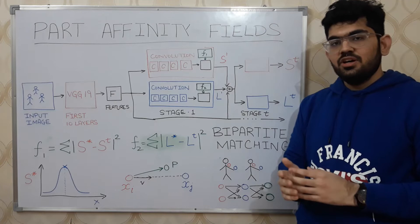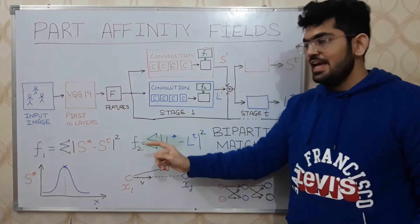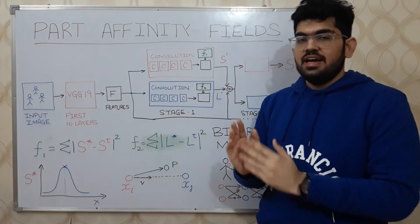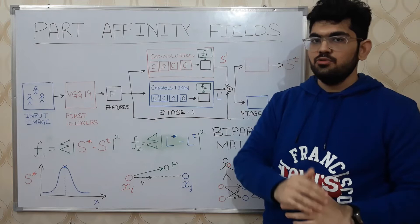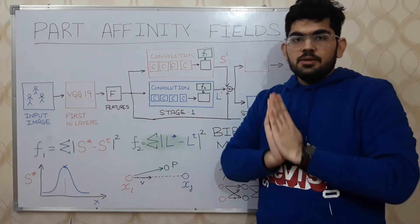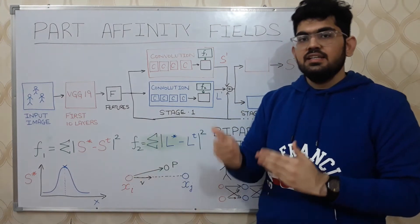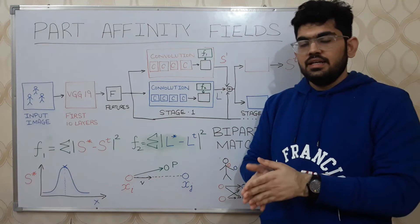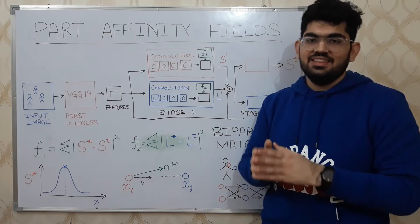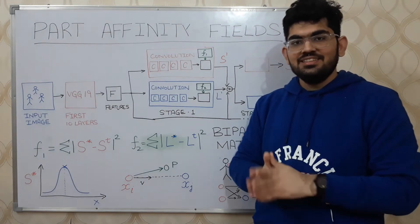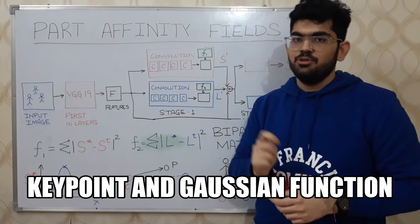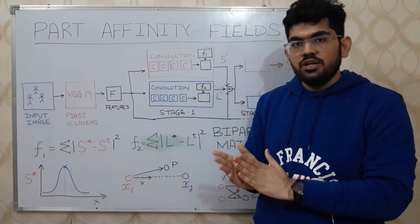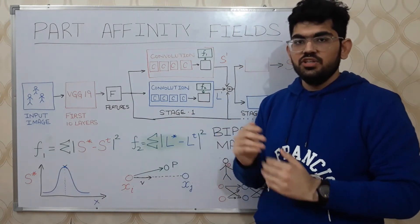There are two separate loss functions for S and L, represented as F1 and F2. F1 is an L2 loss function defined as the sum of the squared difference between the ground truth and the predicted confidence map. The predicted confidence map is represented as ST (the final stage prediction) and the ground truth as S star, which is retrieved from the dataset. S star is derived from the labeled key point and a Gaussian distribution — the labeled key point location is the peak of this Gaussian, and the rest is modeled around it.